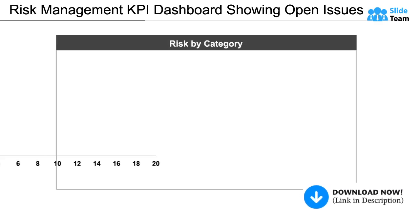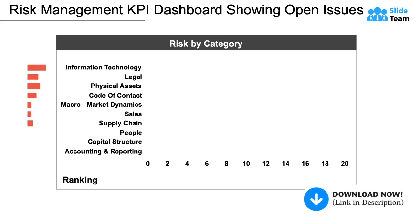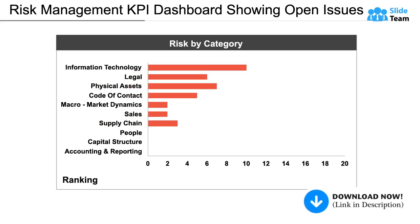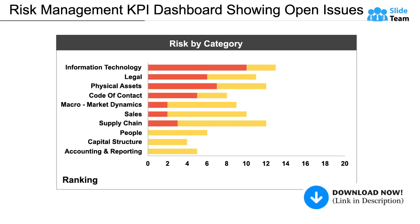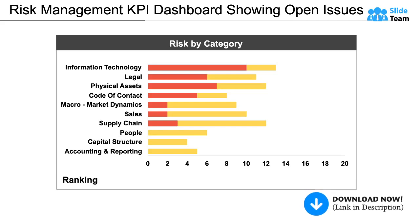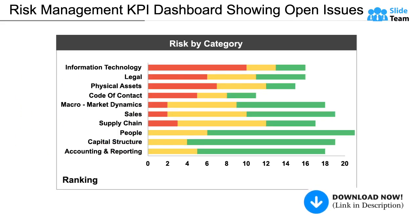Take risk data analysis one step further with this bar graph. It has business elements on its y-axis and a scale on the x-axis to rank process risks based on impact or severity.